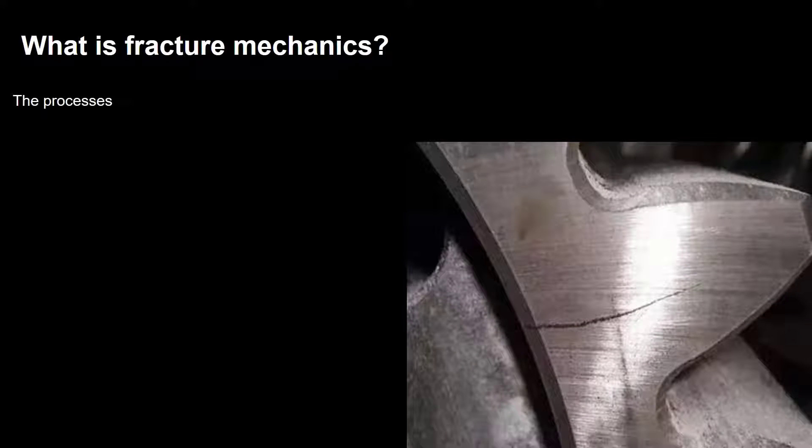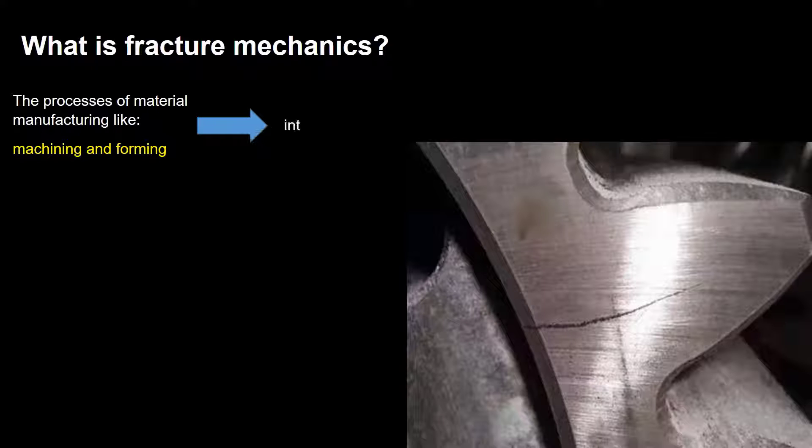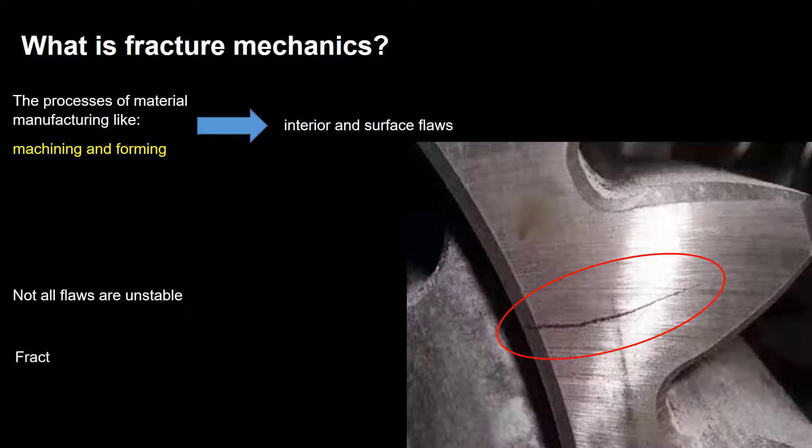The processes of material manufacturing like machining and forming may introduce flaws in a finished mechanical component. So, interior and surface flaws are found in all metal parts. But, fortunately not all such flaws are unstable under service conditions.